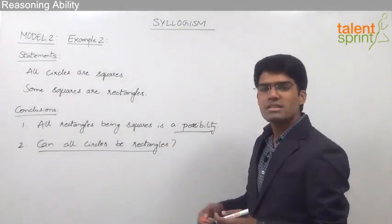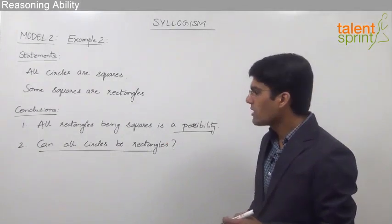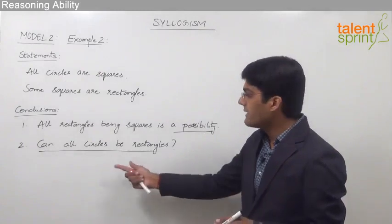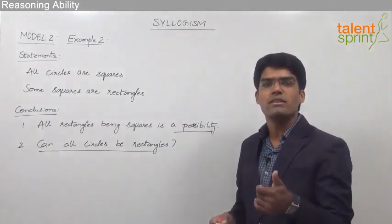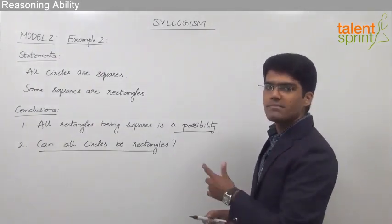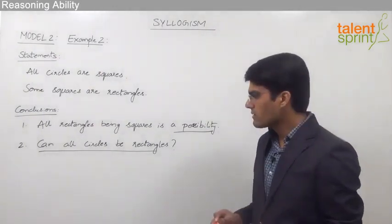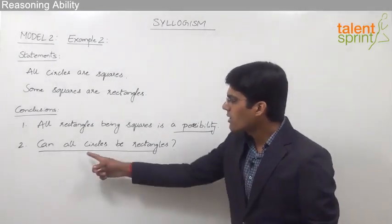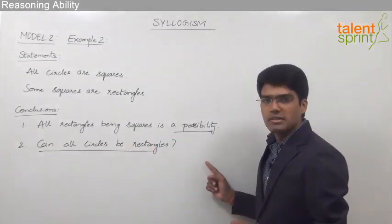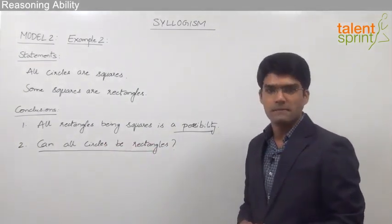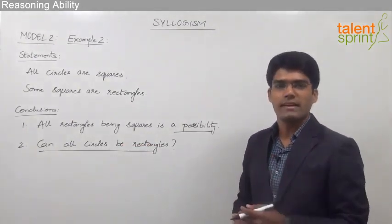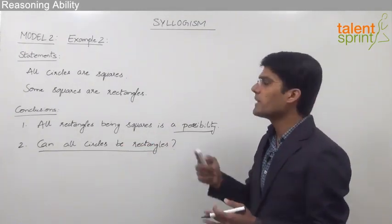Both given conclusions are in the form of possibilities. The first directly says 'all rectangles being squares is a possibility,' and the second starts with the word 'can.' Whenever we see 'can all A's be B's,' that should be treated as a possibility. We just need to prove with at least one diagram that these possibilities follow the given statements.